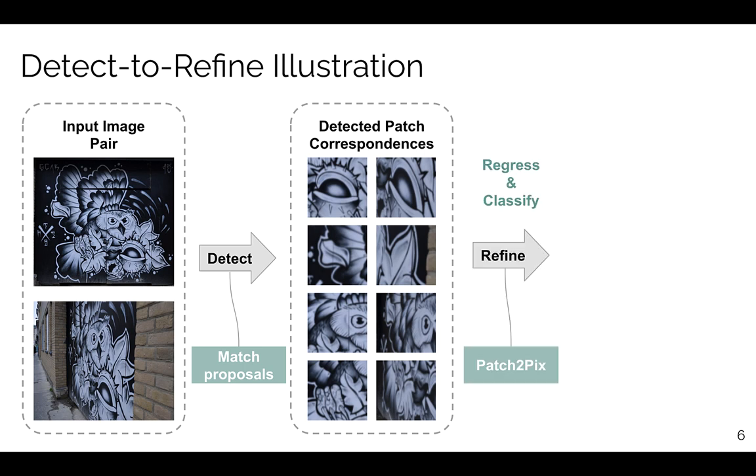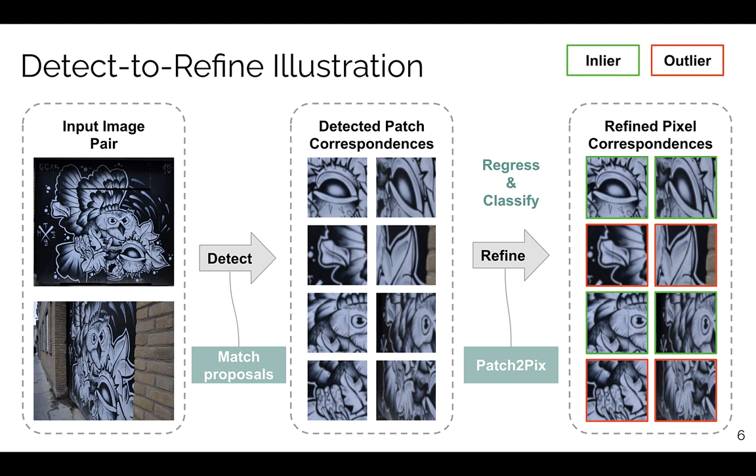Our refinement network Patch2Pix refines a detected proposal by classifying it to be a correctly-matched inlier or an outlier. For an inlier proposal, a pixel correspondence is regressed within the local patches. Notice our framework is not limited to improve NCNet only, it also applies to other methods that suffer from the trade-off between matching accuracy and memory efficiency.